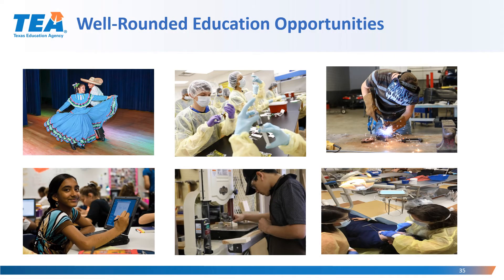Here you can see some pictures that provide just a few examples of activities and programs that could fit under the well-rounded educational opportunities. We have the arts, music, and dance. We also have a high school science class, a dental class where students are actually participating in a dental lab as part of their dental assistance program in high school. We have a construction class and a welding class, as well as a computer lab where one of the students is digitally writing on the screen with a stylus. All of these are just examples of ways that a district could meet well-rounded educational opportunities.